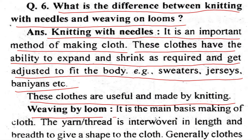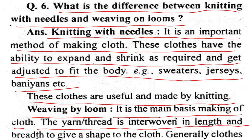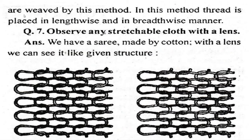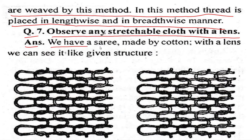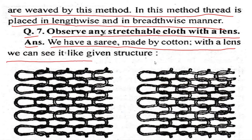Weaving by loom: It is the main method of making clothes. The yarn thread is interwoven in length and breadth to give shape to clothes. In this method, thread is placed in a lengthwise and breadthwise manner. For the observation activity, we have a saree made by cotton, which when examined closely can be seen to have a grid-like structure.